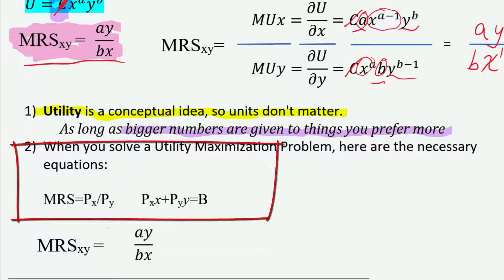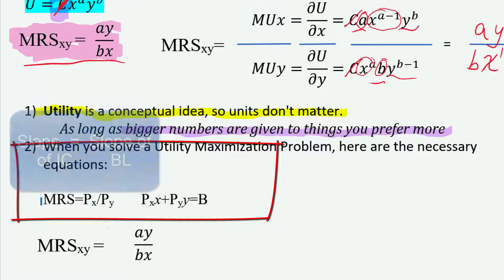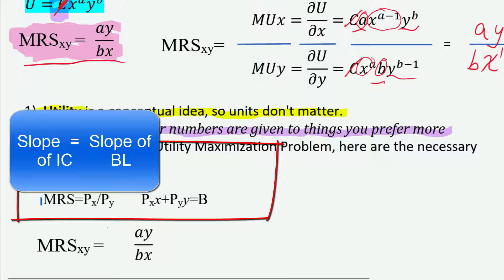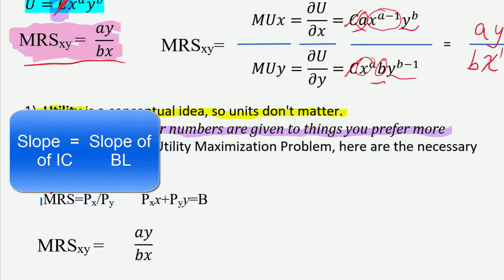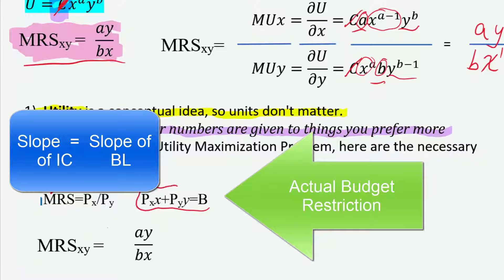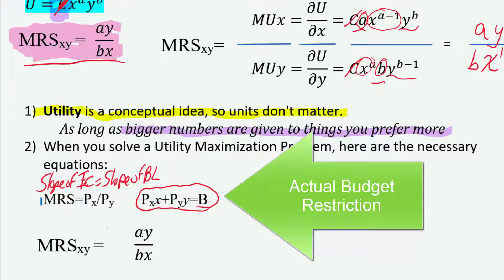Marginal rate of substitution equals the price of x over the price of y. What this equation does is guarantee that the slope of an indifference curve equals the slope of the budget line — we're getting a tangency there. The second equation is just the budget line equation itself, which is the constraint that makes sure we don't spend more money than we actually have.